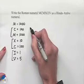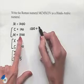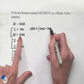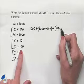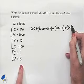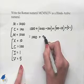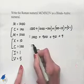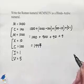We interpret this as follows: we take our first value of 1000, and add to that the value where we take the larger number 1000 and subtract from it the smaller. We do the same thing — add to that 100 minus 10, and then add 5 minus 1. So that gives us 1000 plus 900 plus 90 plus 4, and that gives us our Hindu-Arabic numeral of 1,994.